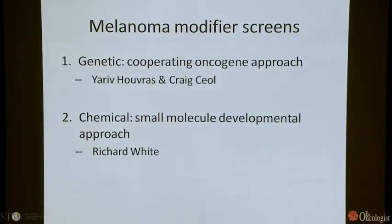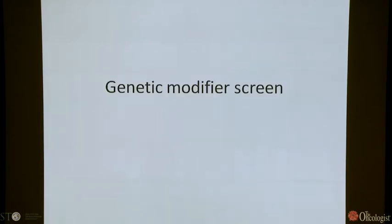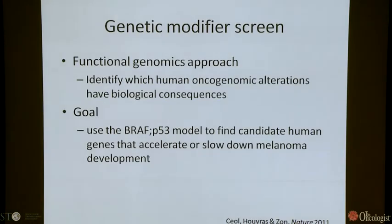The genetic modifier screen was work done by research fellows and postdocs in the Zahn lab. The first was a cooperating oncogene approach. The second was a small molecule developmental approach. For the genetic modifier screen, Uriif and Craig were interested in a functional genomics approach in the zebrafish. The key question — which I think every person in this room is grappling with — is to identify which human oncogenomic alterations have actual biological consequences: which are the drivers and which are the passengers. The goal was to use the BRAF P53 model to find candidate genes that accelerate or slow down melanoma.